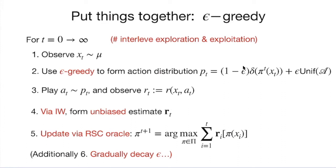Epsilon is a hyperparameter that needs tuning, like any hyperparameter in machine learning. This is a much more practical version than hard explore-and-commit. We interleave exploration and exploitation with a small probability epsilon of exploring using simple uniform exploration. At the end of each day, do a big supervised learning optimization over all collected data and update the policy for the next day. This is like shutting down your system for a few minutes each night to run the optimization.